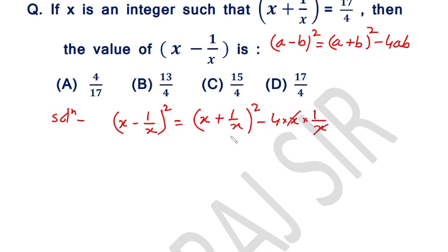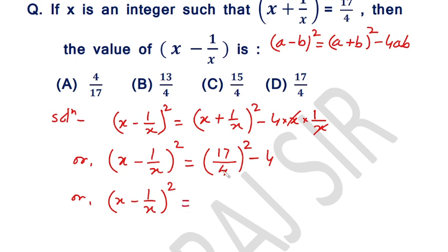Cancel this x and x. Or x minus 1 over x whole squared equals, put the value of x plus 1 over x which is given here, 17 over 4 whole squared minus 4. Or x minus 1 over x whole squared equals 17 over 4 whole squared, means 17 times 17 over 4 times 4 minus 4.